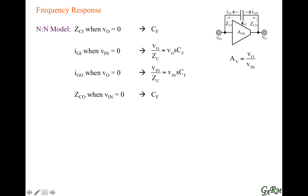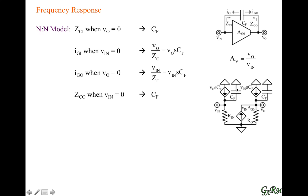We've turned this capacitor into an equivalent two-port network, splitting the effects into those at the input and those at the output. We derived an equivalent impedance at the input equivalent to a capacitor, an equivalent current source at the input, an equivalent current source at the output as a function of the input voltage, and an equivalent impedance at the output.